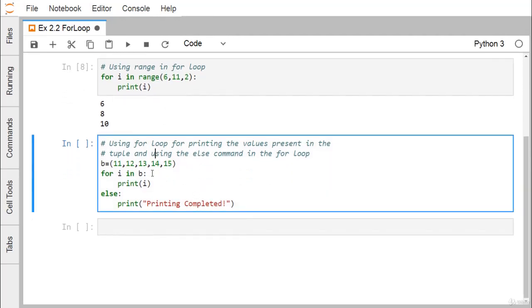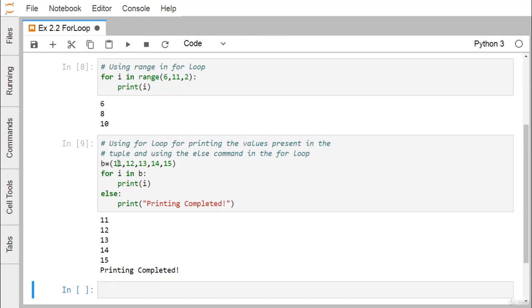Let us go for another way. How to write this one. You can find that using for loop for printing the values present in the tuple and using the else command in the for loop. How to do that one. This is the outcome we are having. b is equal to 11, 12, 13, 14 and 15. They are coming here and this is nothing but a tuple. For i in b, it will be picking up the values from this tuple one value at a time in each and every iteration and when this particular tuple will get exhausted then else block will get the control and then printing completed that message is going to get printed.